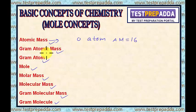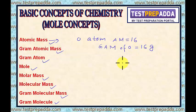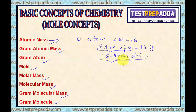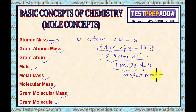Gram atomic mass is that quantity of the element whose mass in grams is numerically equal to its atomic mass. For example, the gram atomic mass of oxygen is 16 grams. This gram atomic mass is the same as 1 gram atom of oxygen, or 1 mole of O, which is 16 grams — and this is also the molar mass of O.